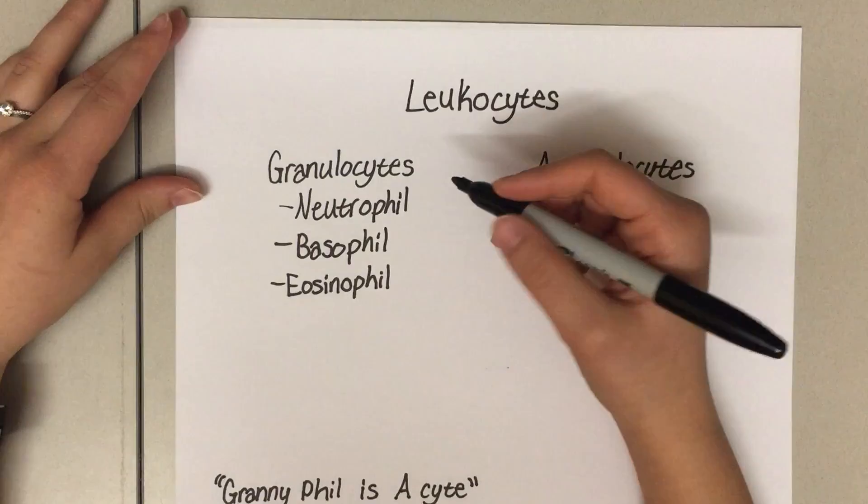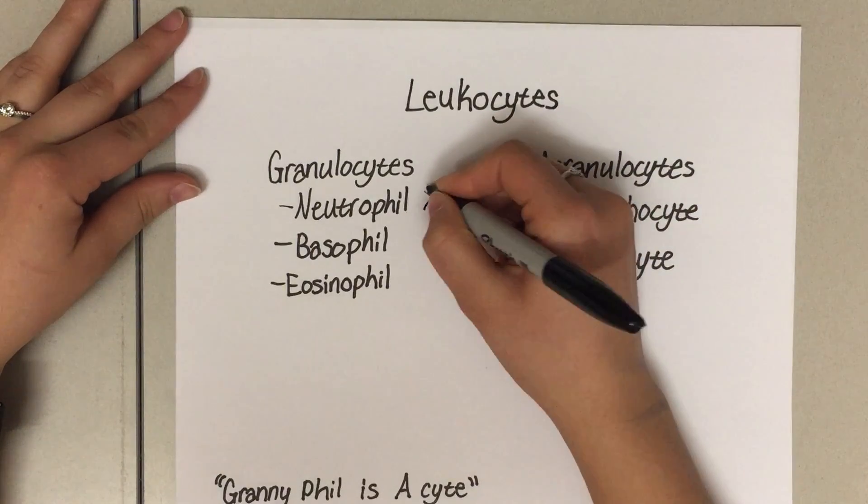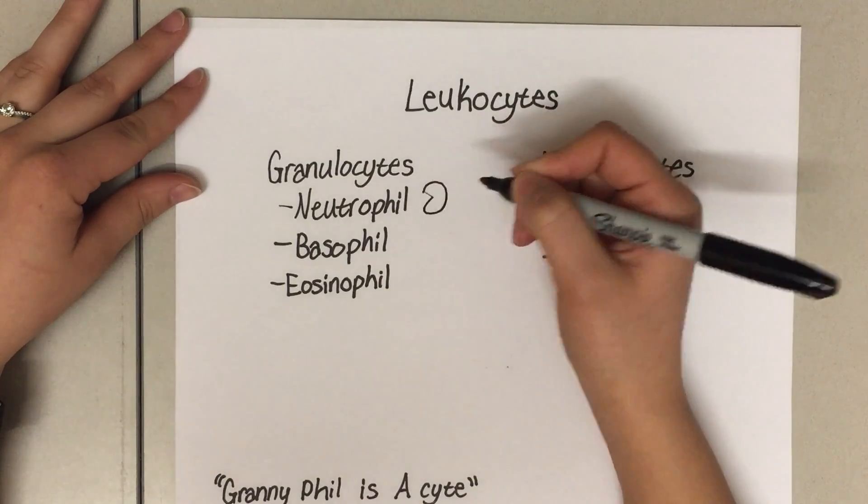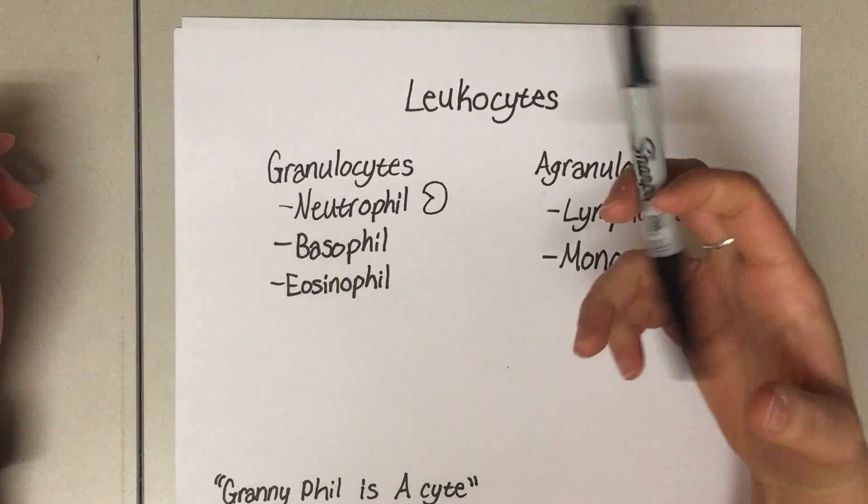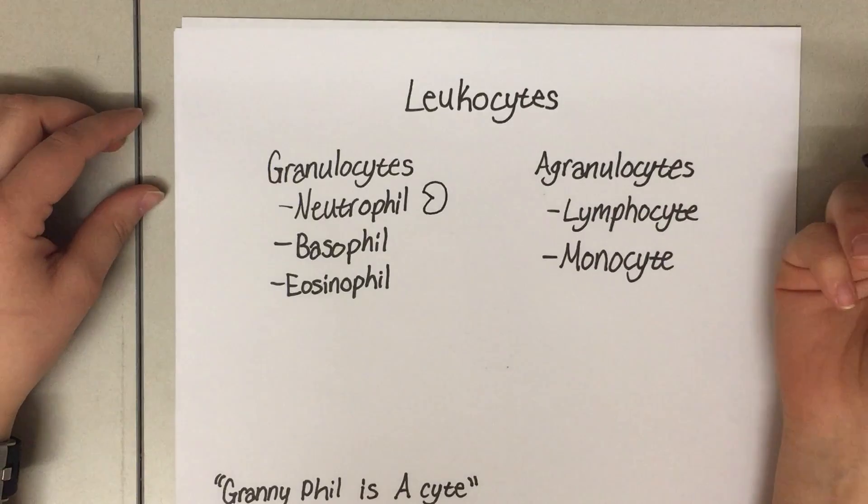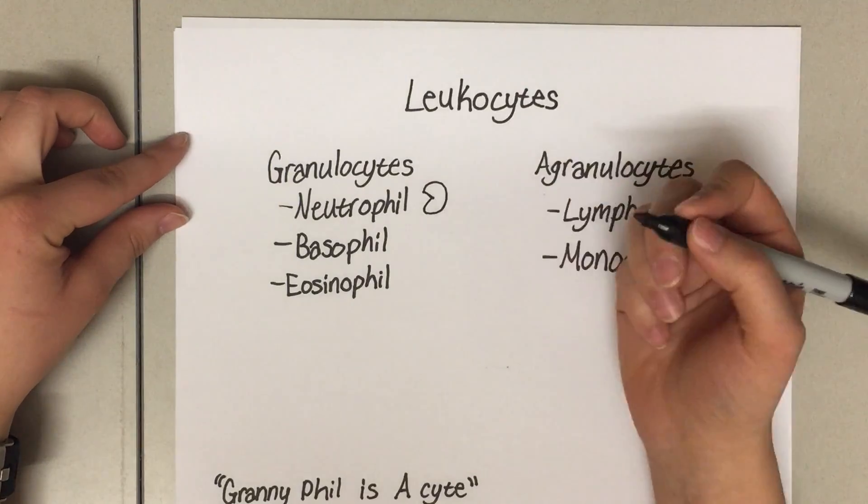Neutrophils are really good at eating up pathogens. You can kind of remember like a little pac-man. He's a first responder and will eat up any pathogens or anything that doesn't belong.